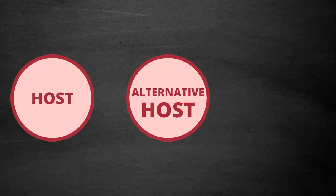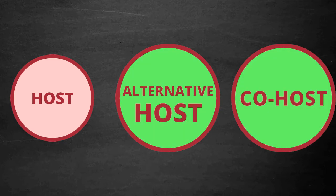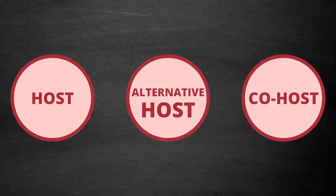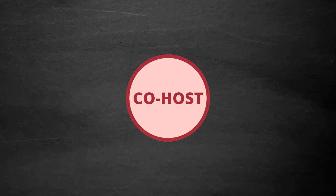So far, we have discussed two types of roles in Zoom: hosts and alternative hosts. There is a third role: co-hosts. Co-hosts have the same permissions as alternative hosts in a Zoom meeting, except they cannot start a meeting. If both the host and another user will be present together in the meeting, then there is no need to assign the alternative host prior to the meeting; rather, we recommend assigning the user as co-host during the meeting itself.